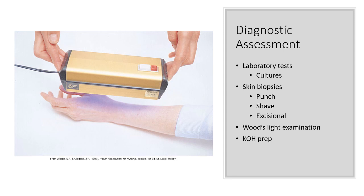The Woods light examination uses a black light — different skin conditions fluoresce or turn different colors under this light. For example, tinea turns a kind of green color.